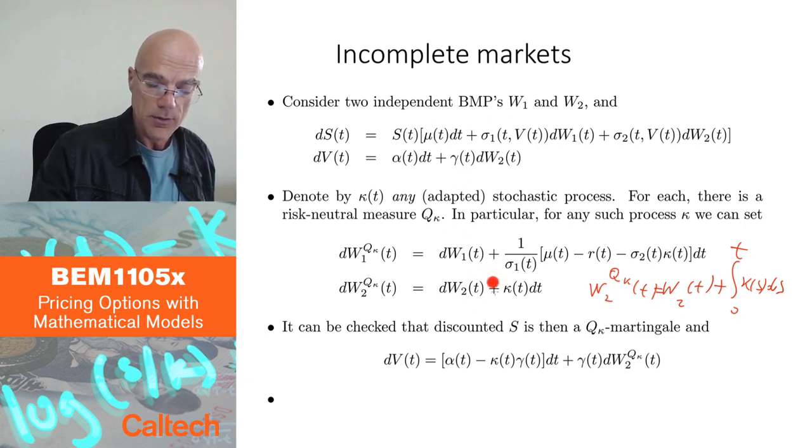So for any change, this type of change of probability like this, you do get r dt plus some martingales plus dW terms. So for any kappa, you have a martingale probability, you have a risk-neutral probability.